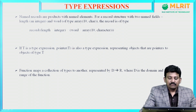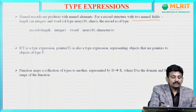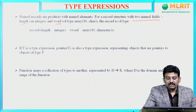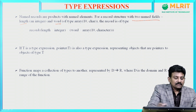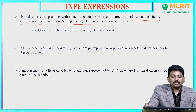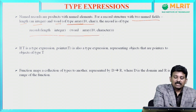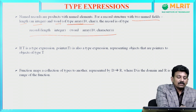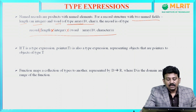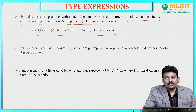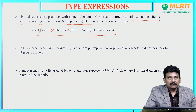For a record structure with two named fields — length and word — length is of type integer and word is of type array of 10 characters. So the record is of type: record of (length × integer) × (word × array(10, character)).